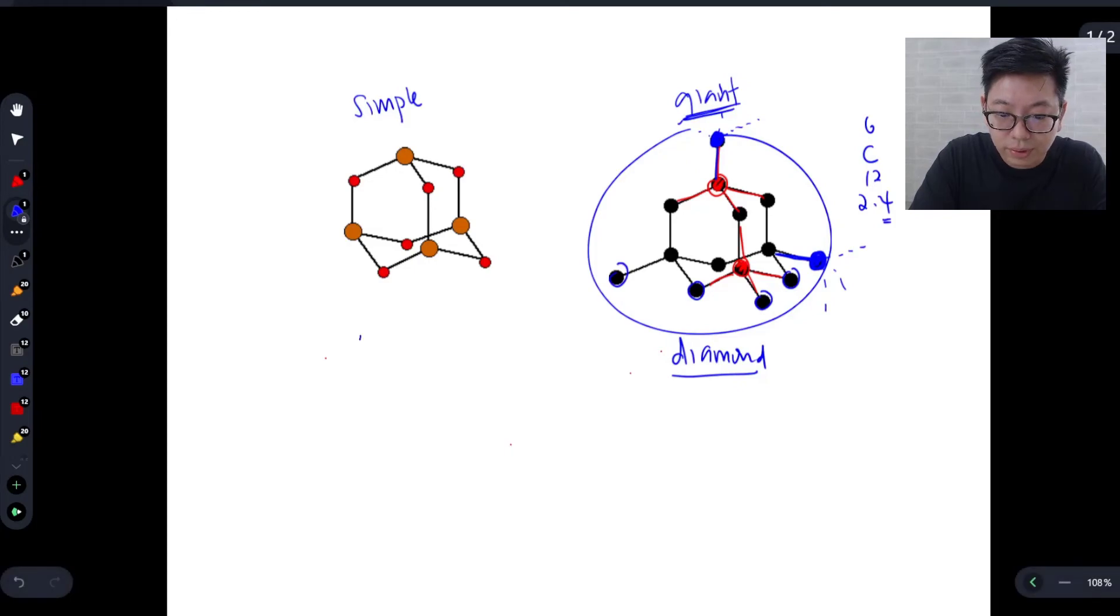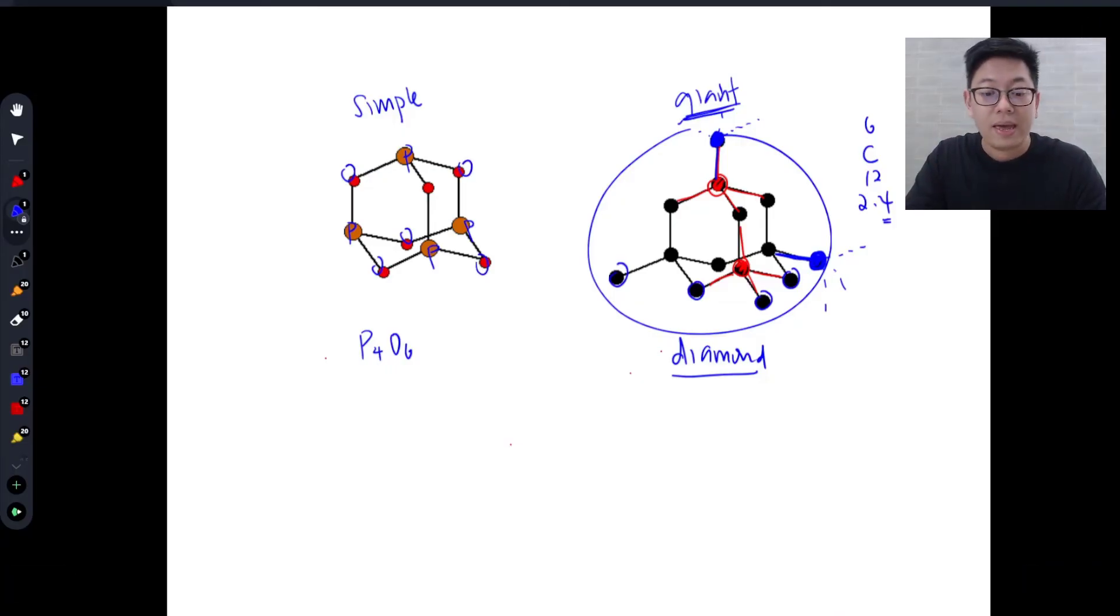If I recall correctly, this is P4O6. So these are phosphorus atoms, P and P, P and P, and that's O, O, O, O, O, O. So one molecule has four phosphorus and six oxygen.